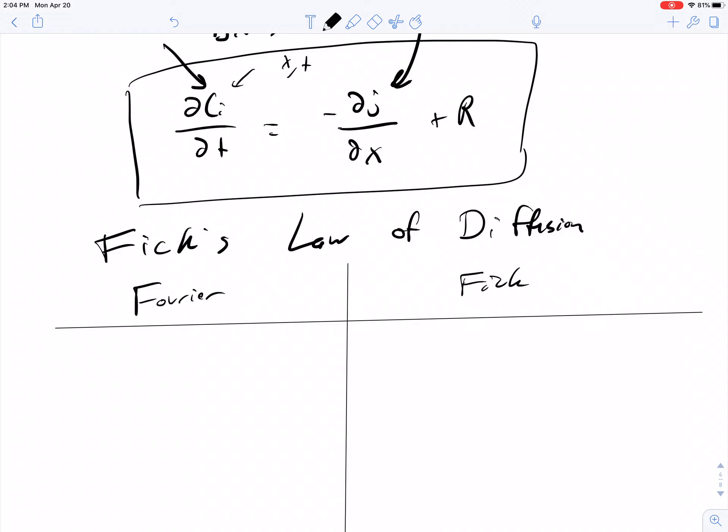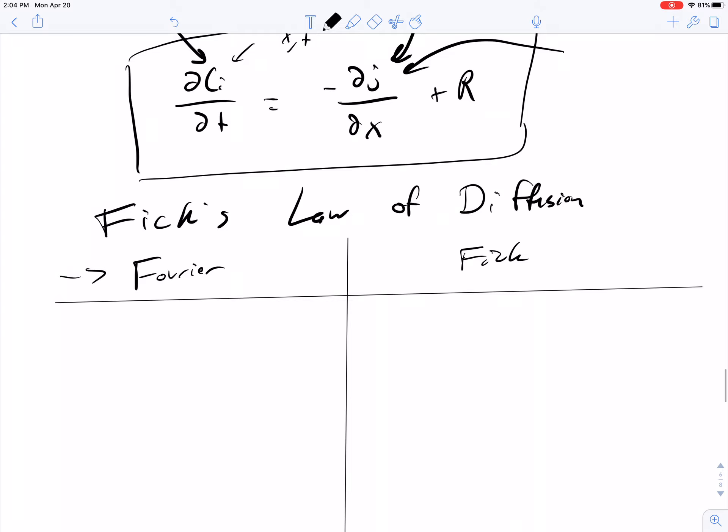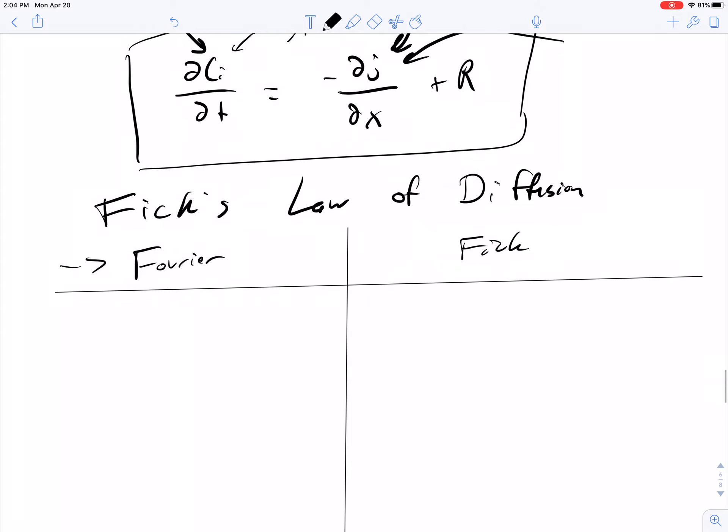We're going to derive Fick's law for diffusion by analogy to Fourier's law. This is to find an empirical relationship to put in for the flux, for this term here that's the divergence of the flux, the derivative of the flux. This is done by analogy.